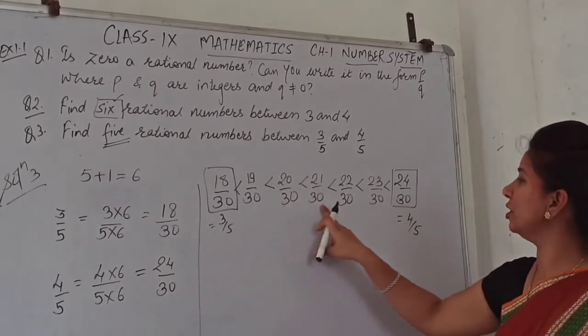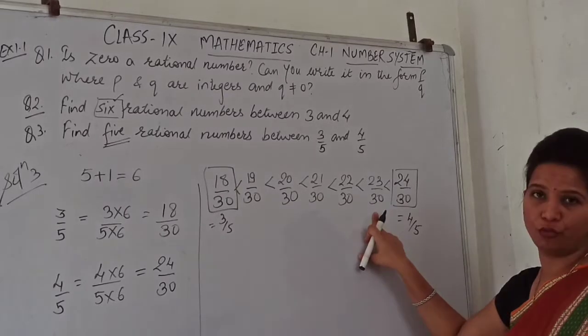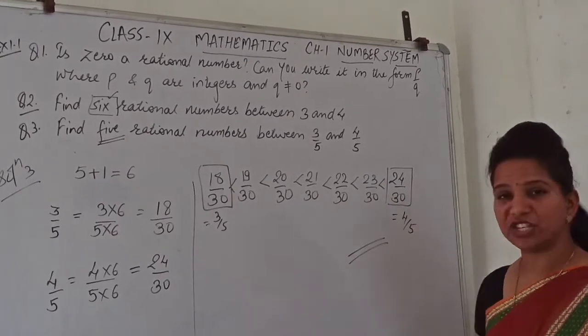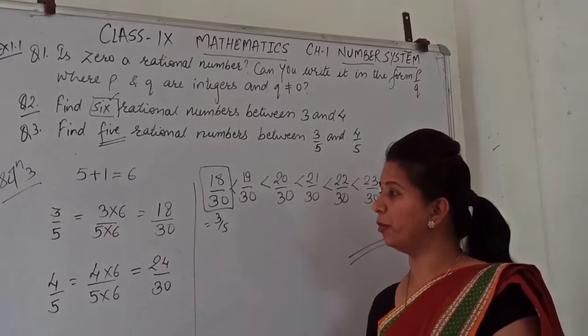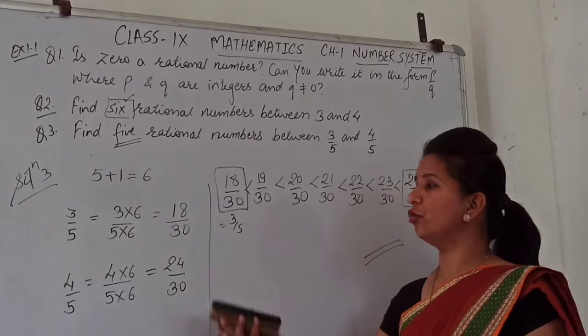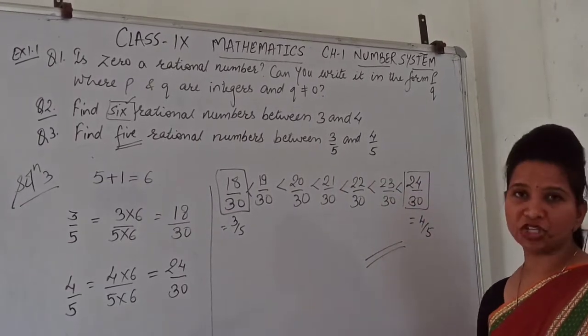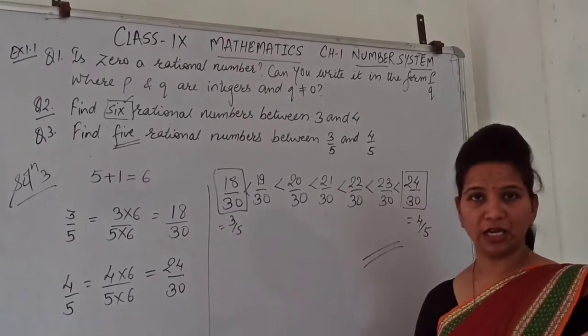So this gives exactly 5 rational numbers: 1, 2, 3, 4, and 5. This is a straightforward question — keep the denominator the same and list the numerators in between.